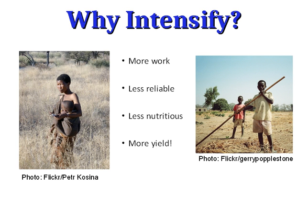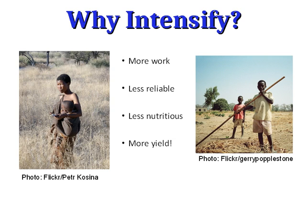Increased yield can also support a different diet. When we talked about biogeography and the food web, there is a huge energy loss at each step — only about 10% of the energy available at one stage of the food web passes on to the next. And so you can support fewer and fewer organisms at each step of the food web.